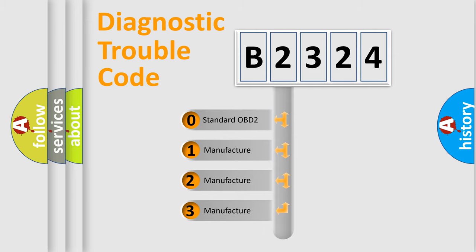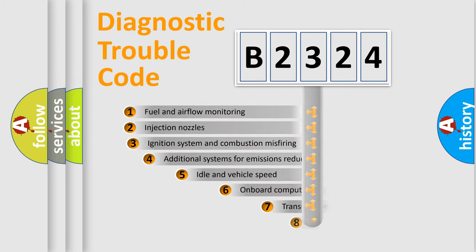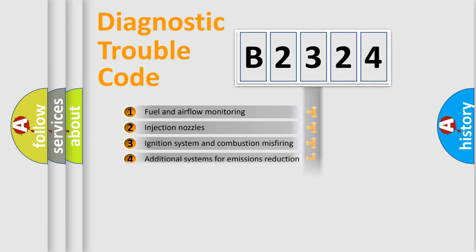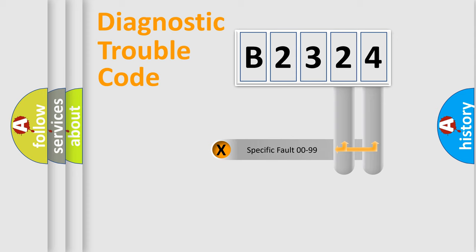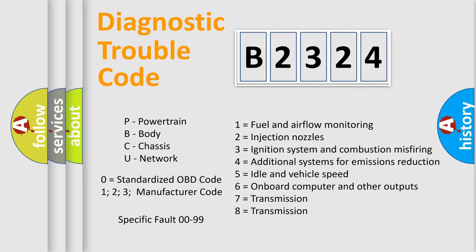If the second character is expressed as zero, it is a standardized error. In the case of numbers 1, 2, or 3, it is a more specific expression of a car-specific error. The third character specifies a subset of errors. This distribution is valid only for the standardized DTC code. Only the last two characters define the specific fault of the group, and this division is valid only when the second character is expressed by the number zero.